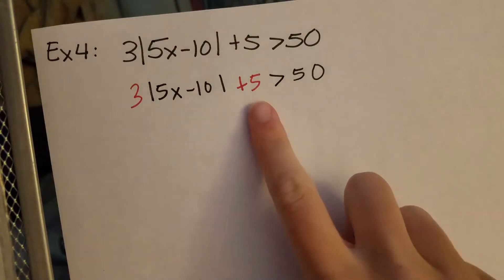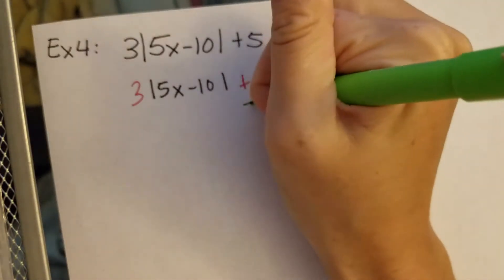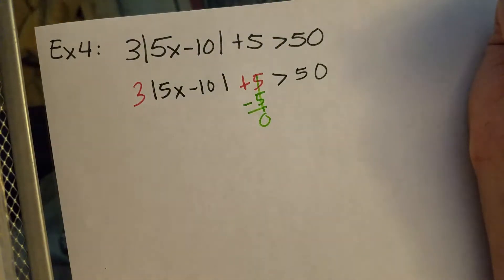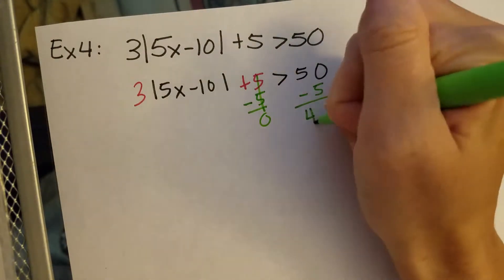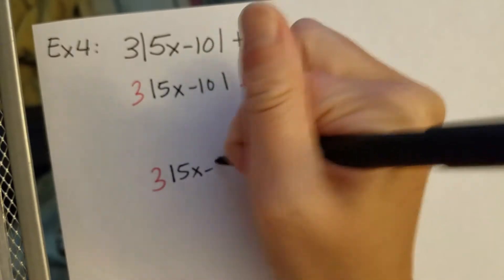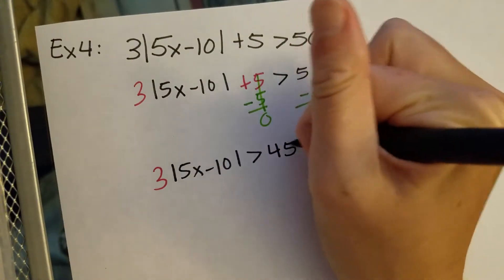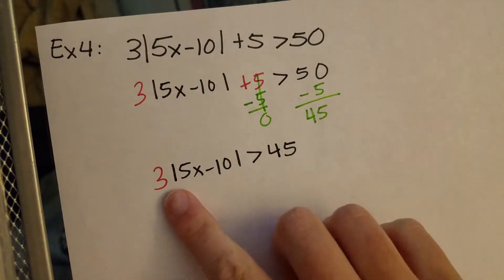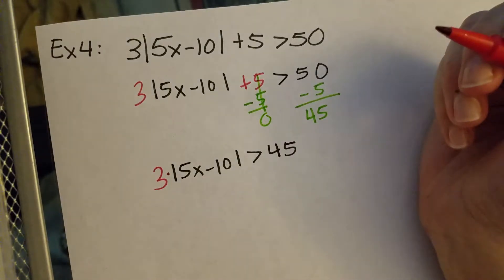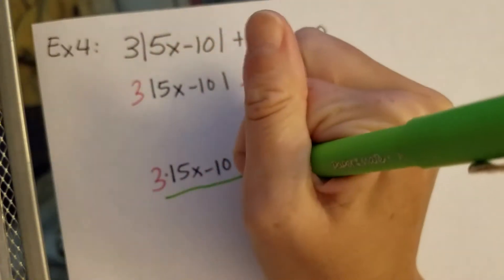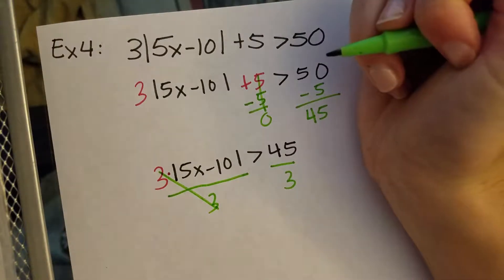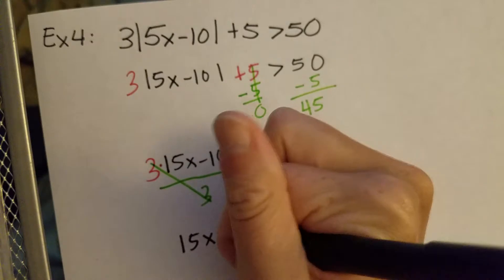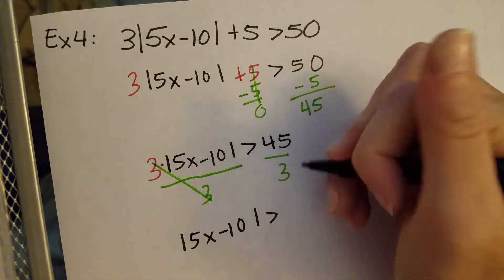Let's dive in. This plus 5 must be moved to the other side. We do that by doing the opposite of positive 5, which is negative 5, which will cancel out on this side. We subtract 5 from the right side, and 50 minus 5 gives me 45. Now I'm left with the 3, which still needs to be moved to the other side. Since 3 is multiplying the absolute value, we divide both sides by 3. Three divided by 3 cancels, leaving us with |5x − 10| is greater than 45 divided by 3, which is 15.